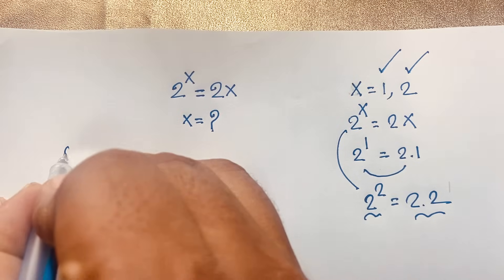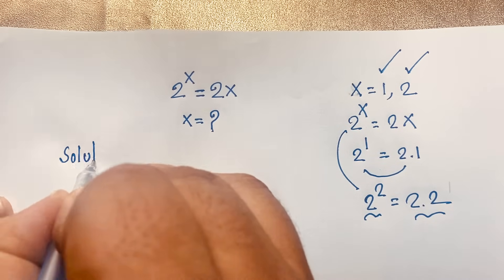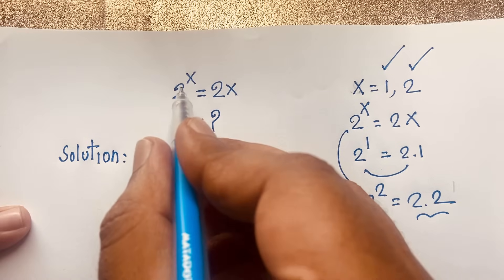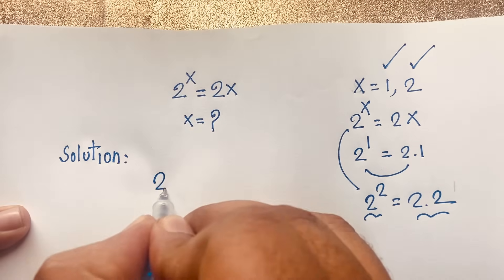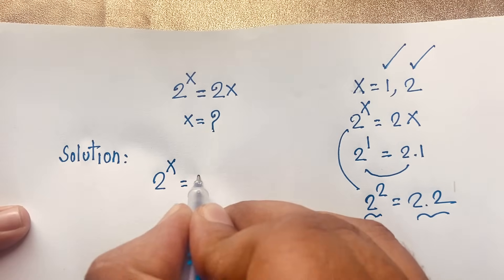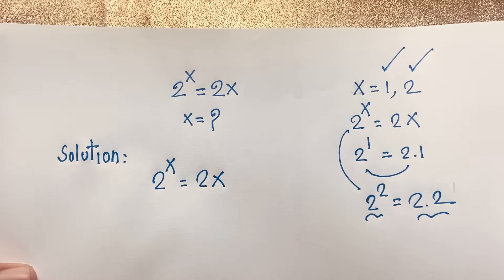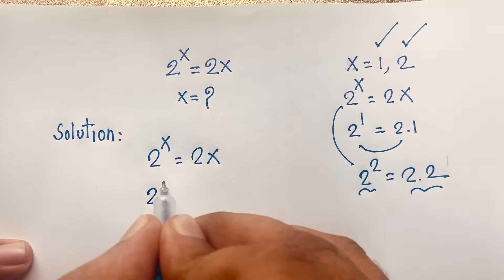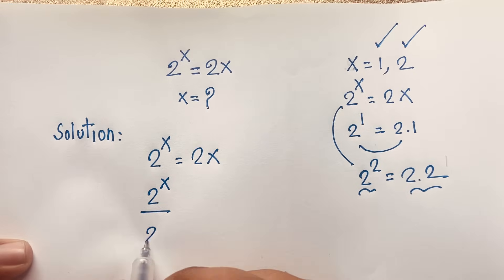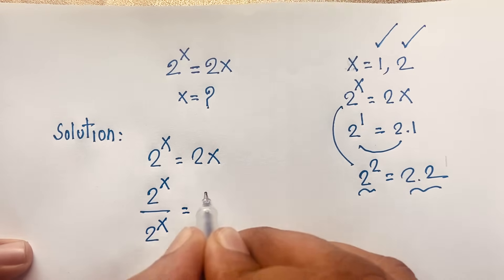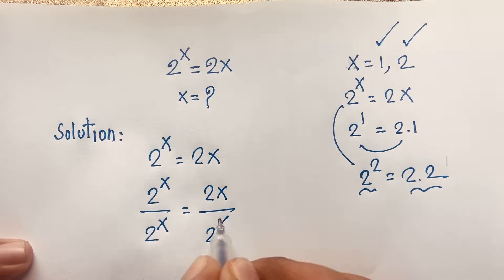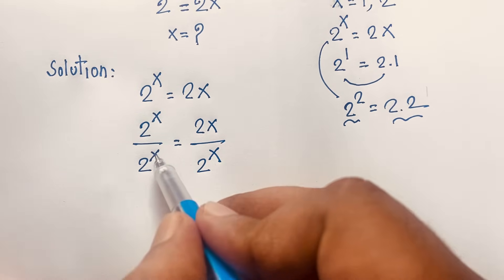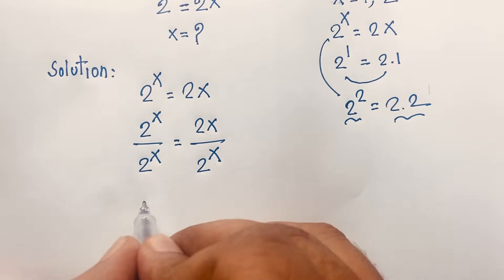For the solution, the method I use is the Lambert W function. Our equation is 2 to the power x equals 2x. I divide both sides by 2 to the power x, so 2^x over 2^x equals 2x over 2^x. The left side cancels to give 1.